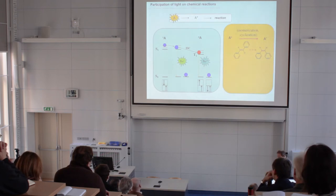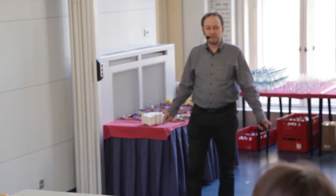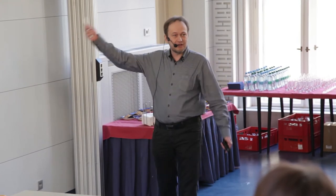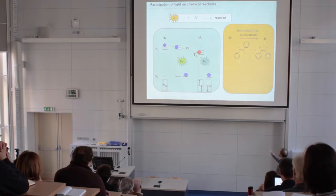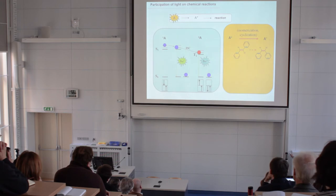One, I think, very known example is isomerization of double bond, which is not allowed in ground state due to high energy barrier, but it's allowed when the compound is irradiated with, for example, UV light.